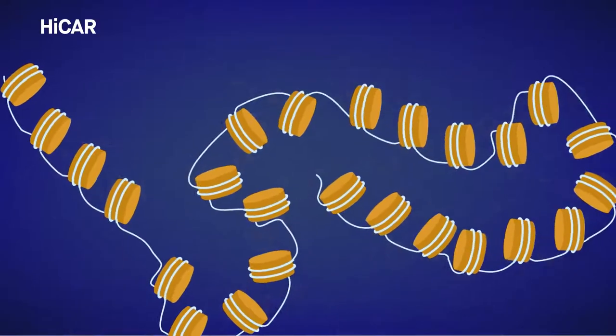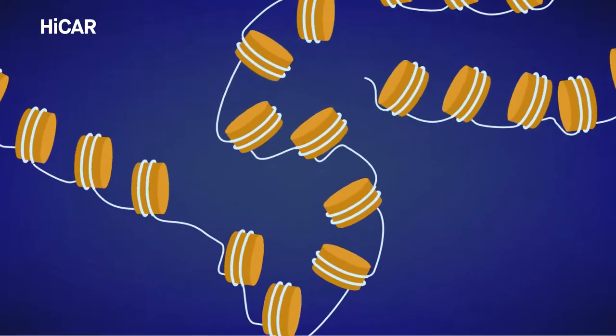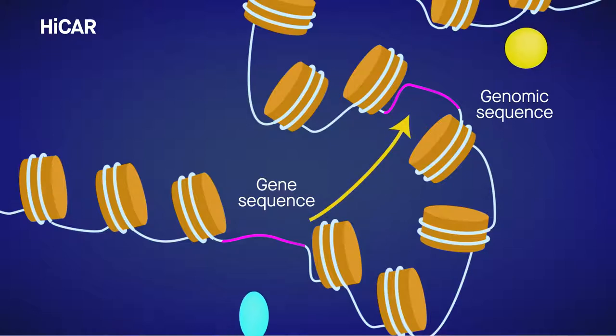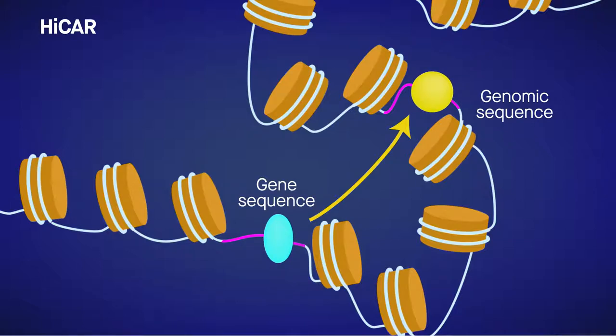HICAR builds off the Hi-C method, which uses high-throughput sequencing to detect how different regions of genomic DNA interact with each other. Specifically, HICAR targets the regions of chromatin that are open and accessible to proteins with information about gene regulation.